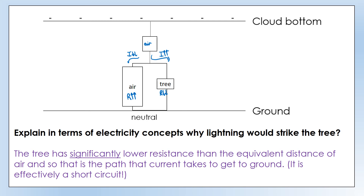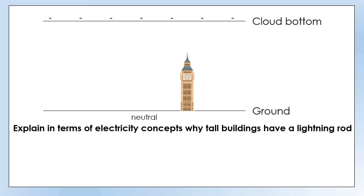A second question: explain in terms of electricity concepts — potential difference, current, resistance — why tall buildings have a lightning rod. To briefly explain what that is: a lightning rod is a metal wire that runs down the side of the building straight into the ground. These were invented by Benjamin Franklin quite a long time ago. Pause the video and have a crack at explaining why we have lightning rods on tall buildings.